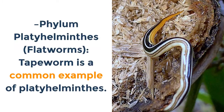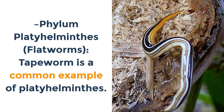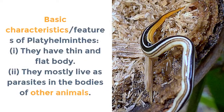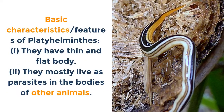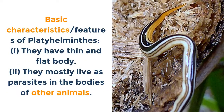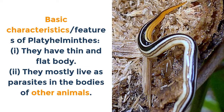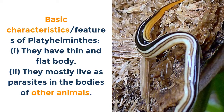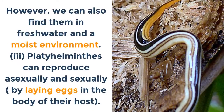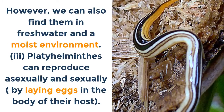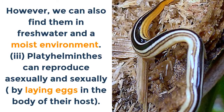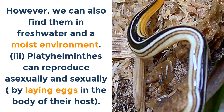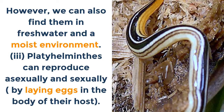Phylum Platyhelminthes — flatworms. Tapeworm is a common example. Basic characteristics: i. They have a thin and flat body. ii. They mostly live as parasites in the bodies of other animals; however they can also be found in freshwater and moist environments. iii. They can reproduce asexually and sexually by laying eggs in the body of their host.